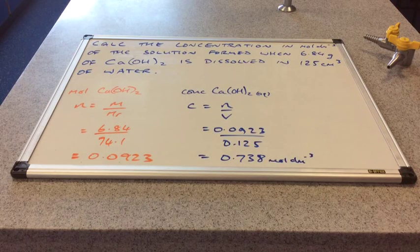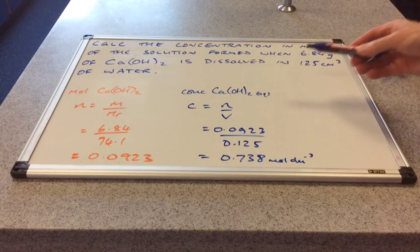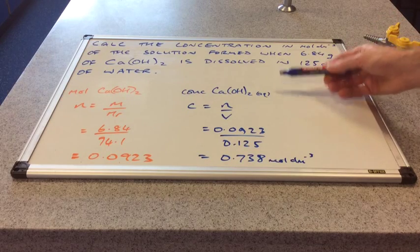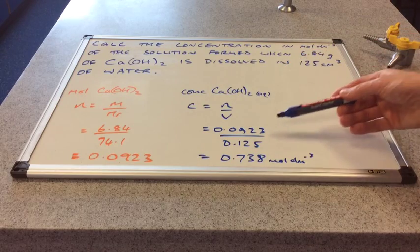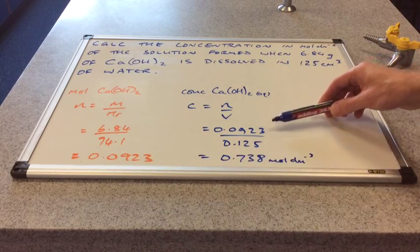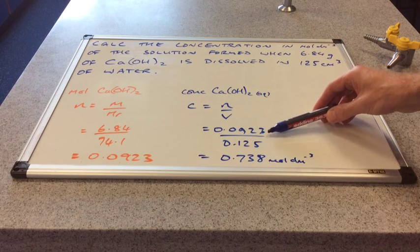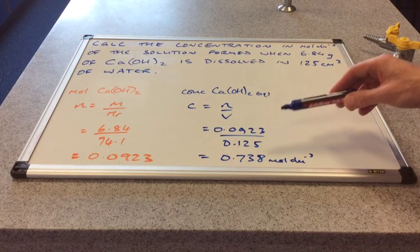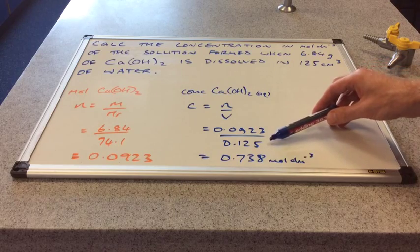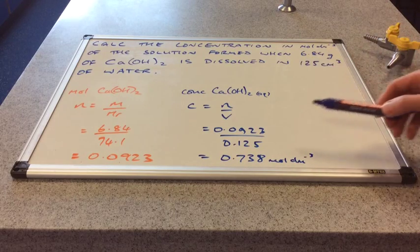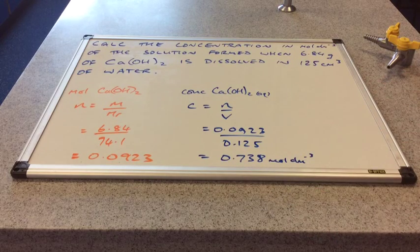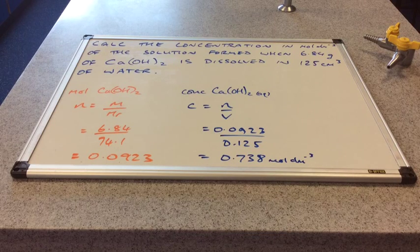The moles of calcium hydroxide feed into the concentration triangle. Concentration equals the number of moles divided by the volume in dm³. So we take 0.0923 moles and divide by the volume in dm³ — remember to divide the cm³ by 1000 to convert to dm³. That gives a concentration of 0.738 moles per dm³ to three significant figures.